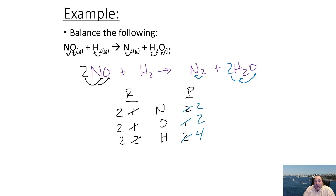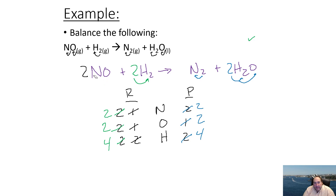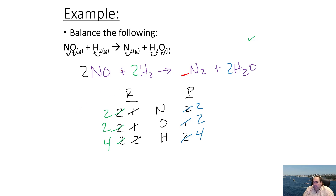We fix oxygen by putting a 2 in front of water on the right-hand side. That gives us two nitrogens, and the 2 distributes to give two oxygens and four hydrogens. We then come over to hydrogen on the left and put a 2 there, giving four hydrogens. Now we have two nitrogens, four hydrogens, and two oxygens on each side — the equation is balanced. You do not need to write a 1, but remember that if nothing is written, it is a 1.